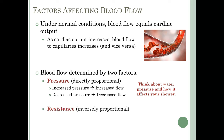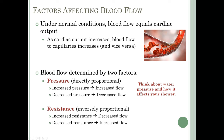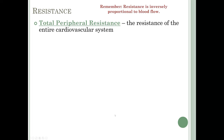The other factor is resistance, which is inversely proportional to blood flow: as resistance increases, blood flow decreases, and as resistance decreases, blood flow increases. This is easy to remember because resistance is defined as forces opposing blood flow. Total peripheral resistance is the resistance of the entire cardiovascular system. As resistance increases, blood flow decreases. Total peripheral resistance is made up of three separate factors.